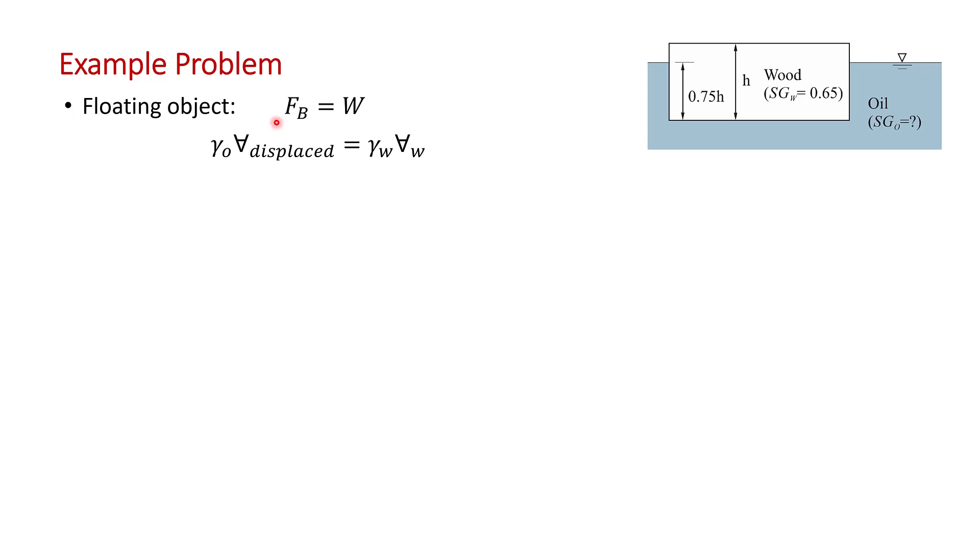And so we have the buoyancy force equals the weight for a floating object. The buoyancy force using Archimedes principle, instead of using the pressure distribution, it's much easier to use Archimedes principle that it's the gamma of oil, which is kind of what we're after. We're after the density of the oil to get the specific gravity times the volume displaced equals the specific weight of the wood times the volume of the wood. That's just the weight of the wood.